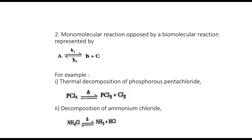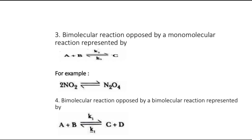The third subtype is where a bimolecular reaction is opposed by a monomolecular reaction. A plus B — a bimolecular reaction — is converted into C, and in the reverse reaction C gets converted back into A and B. K1 is the rate constant for the forward reaction and K-1 for the backward reaction. The simplest example: two molecules of nitrogen dioxide combine to form a single molecule of dinitrogen tetroxide, and in the reverse reaction that one molecule of dinitrogen tetroxide breaks to form two molecules of nitrogen dioxide.